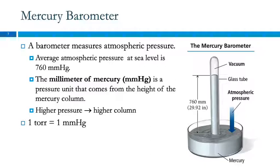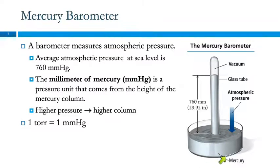How do we measure pressure? We have many modern tools, but let's look at the original device: the mercury barometer. It was a very simple device — a long glass tube filled with liquid mercury, inverted into a dish of mercury. If the tube were open at the end, the mercury would run out, but the top is closed.